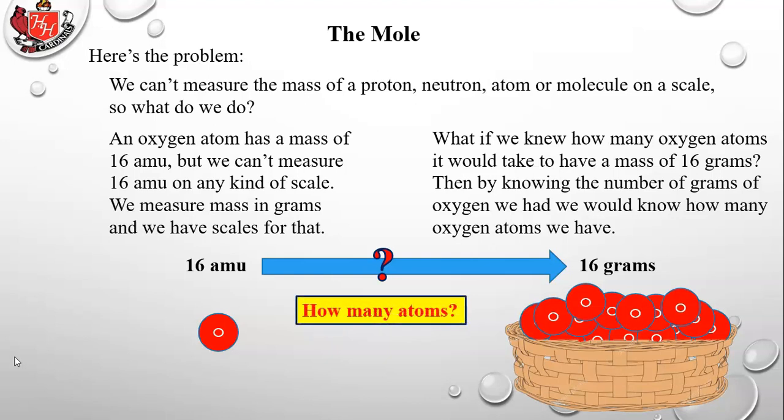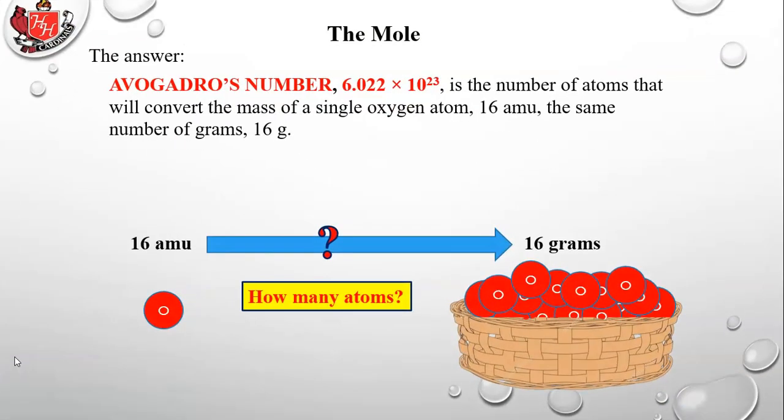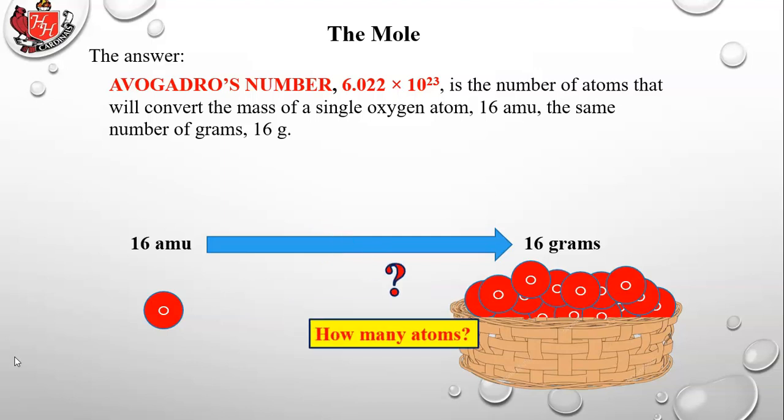Notice the significance: the number in front of amu is exactly the same as the number in front of grams. There is a very specific number of atoms that converts from 16 amu — the mass of a single oxygen atom — to 16 grams, which is a big basket full of oxygen atoms. The answer is Avogadro's number: 6.022 × 10²³ is the number of atoms that converts the mass of a single oxygen atom to the same number of grams.